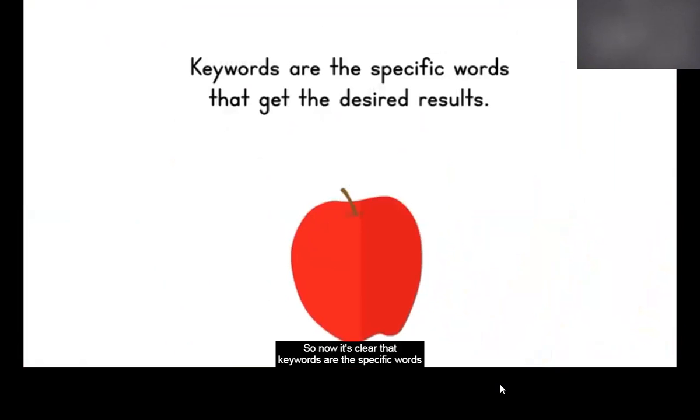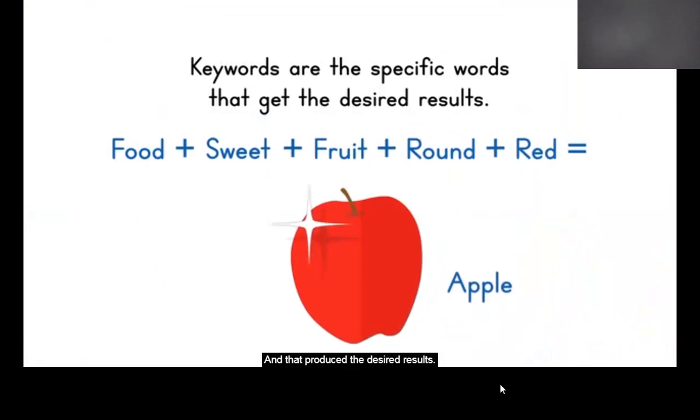So now it's clear that keywords are the specific words that get the desired results. Instead of just asking for food, we asked for food that was sweet, a fruit, round, and red, and that produced the desired results. The same applies to academic research.